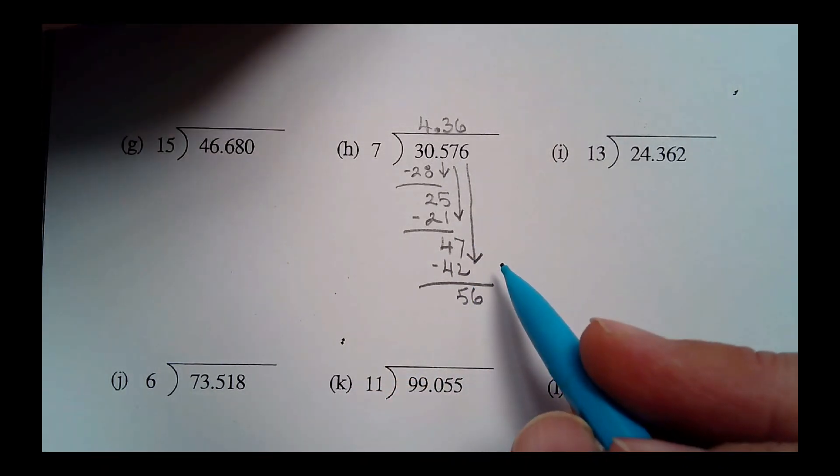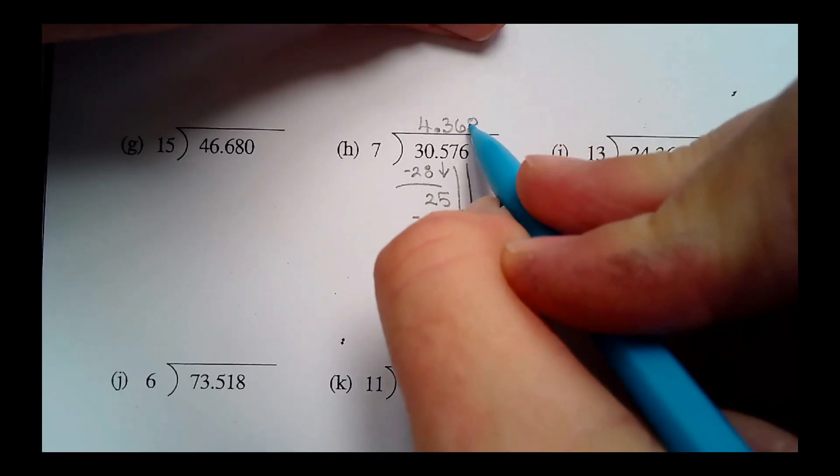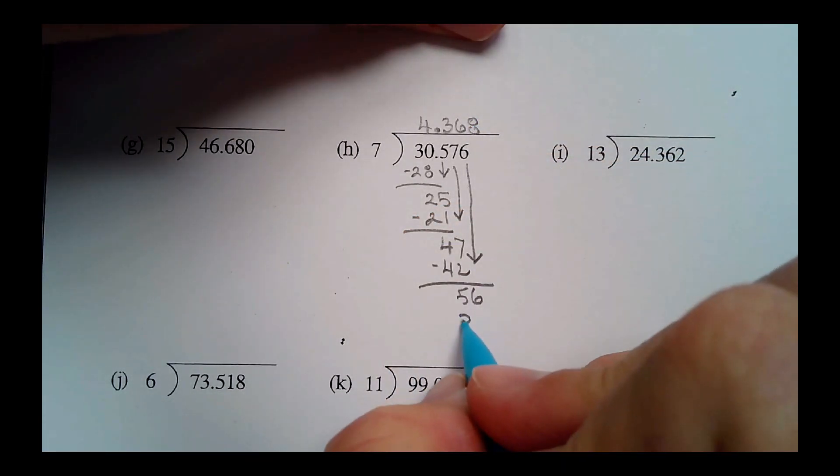And so forty-two from forty-seven is five left over. And the last number I bring down all the way is the six, and then I ask myself, how many times does seven go into fifty-six? Well, that goes in evenly eight times, and that's fifty-six with nothing left over. So there's literally h done for you. Let's look at i.